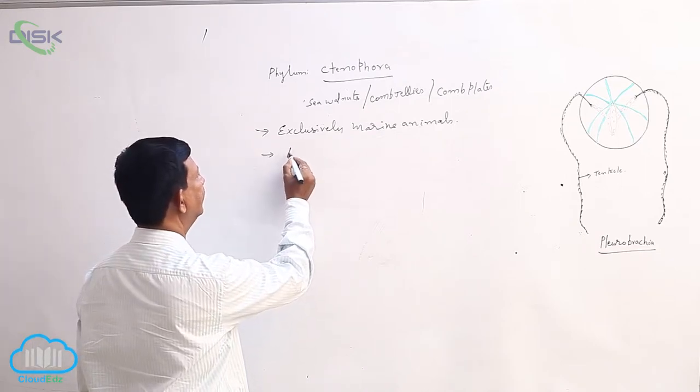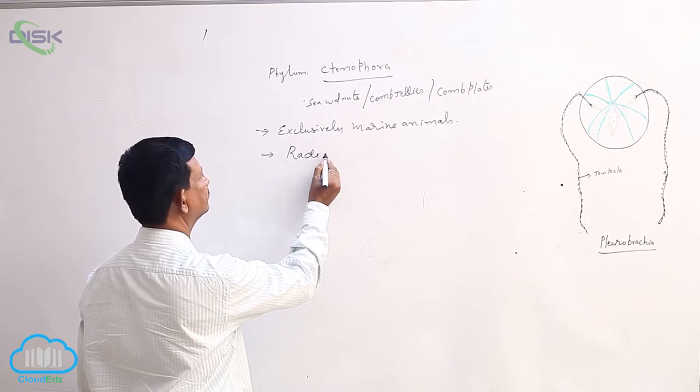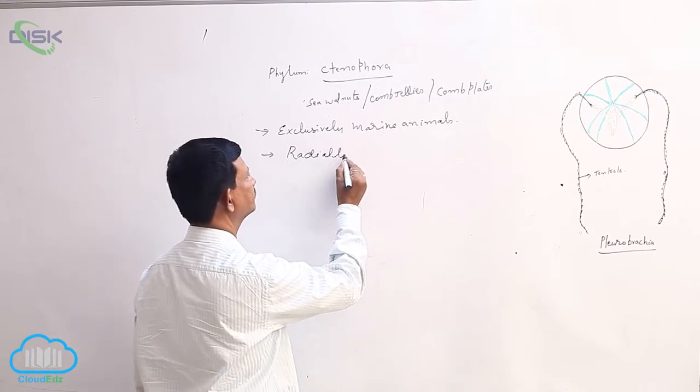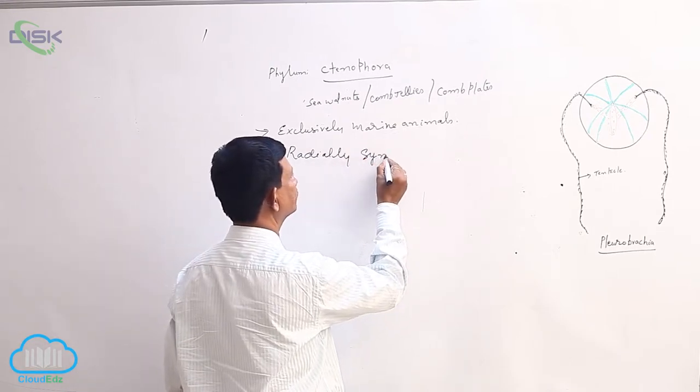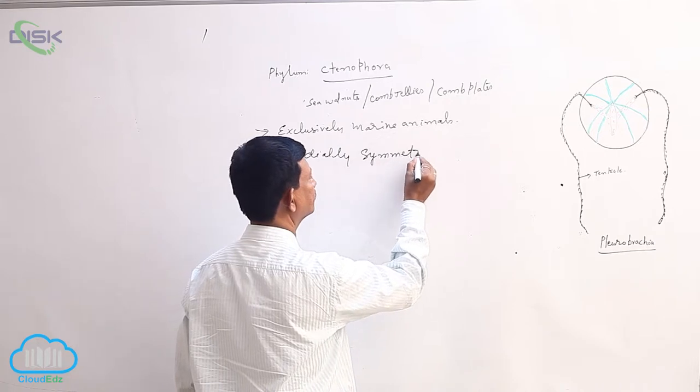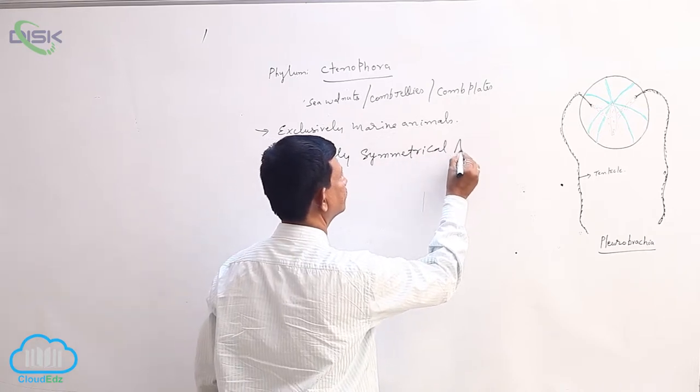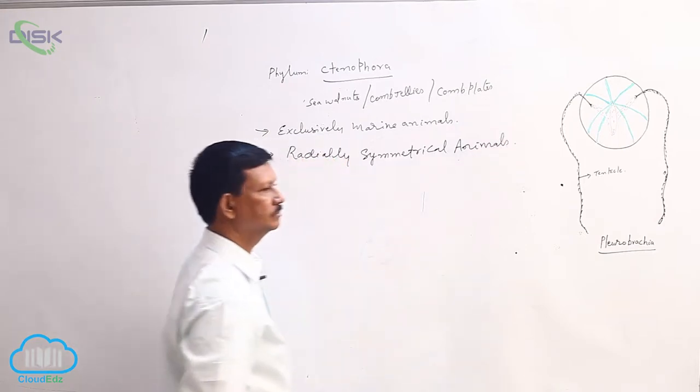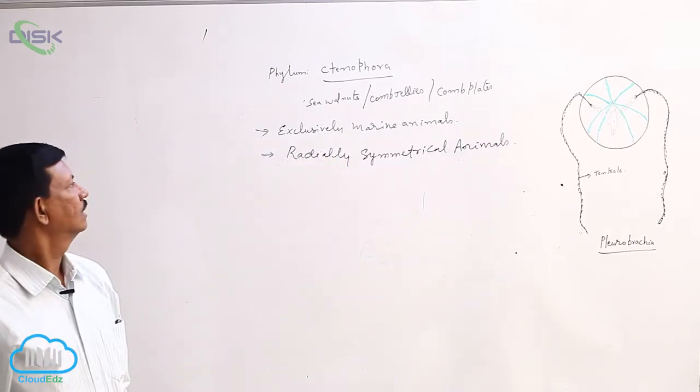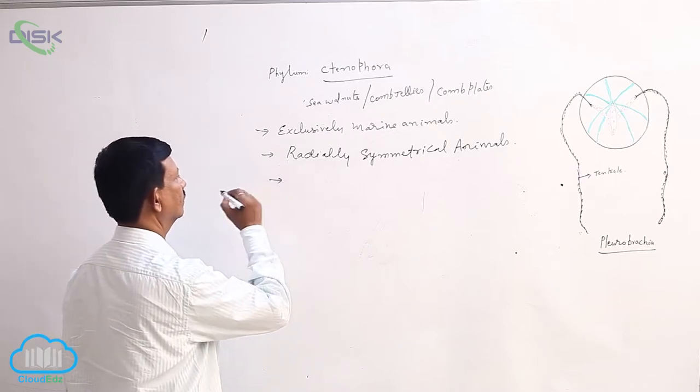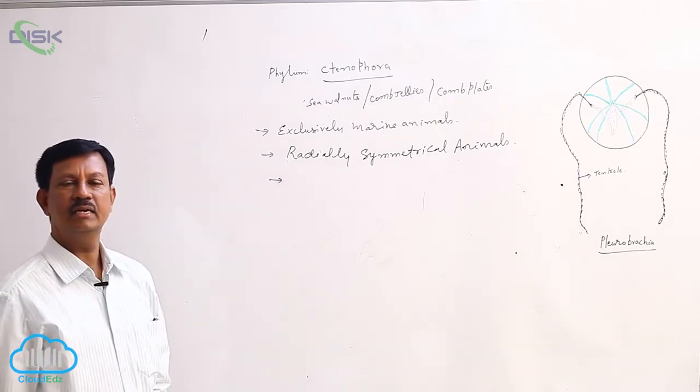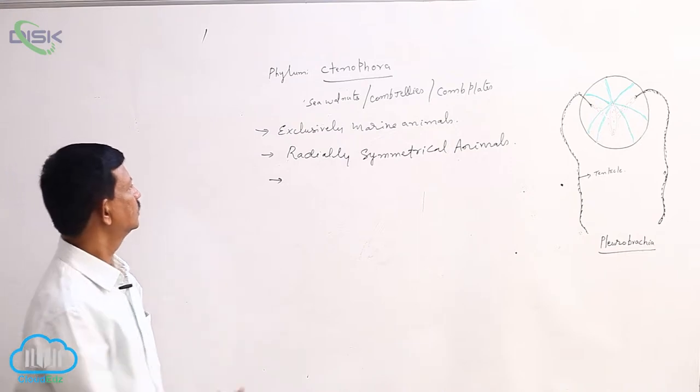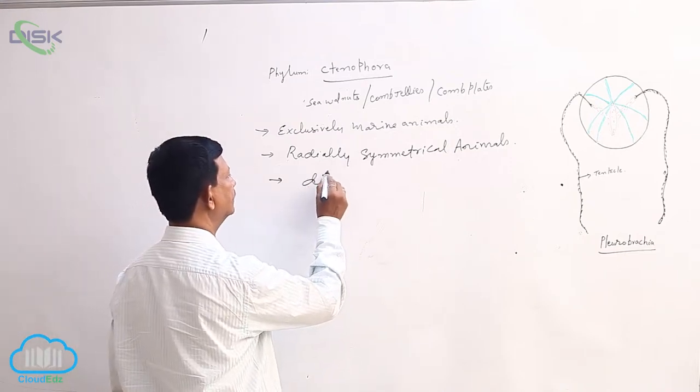These are radially symmetrical animals. These animals show diploblastic nature.